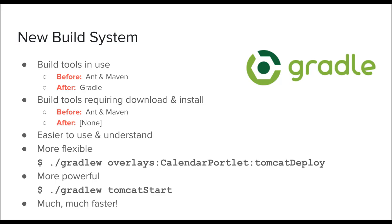You can issue a build command that individually deploys, for example, the calendar portlet to Tomcat. This was not feasible in the previous build tool. Previously if you wanted to deploy a bundled portlet like the calendar portlet or the announcements portlet, you were obligated to build and deploy them all. With the new build tool, you can do any operation — a build, a test, or even database import-export for one module at a time.